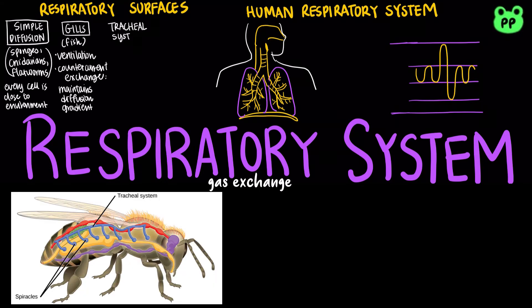Insects breathe through the tracheal system, which consists of tiny branching tubes known as the tracheae that penetrate the body. Spiracles are external openings to the tracheae, which supply oxygen directly to the body cells. This means that insects have separate respiratory and circulatory systems.